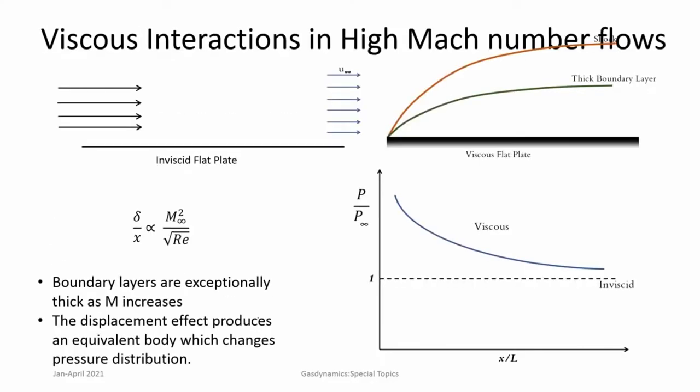We looked at the phenomenon of flow separation, which is important in the context of boundary layers and also increases drag significantly. We also looked at compressible boundary layers. Now we look at how these observations from the last class affect flow in high Mach numbers when you have shockwaves as well. The first concept is that of the boundary layer — we know that it increases rapidly with Mach number.